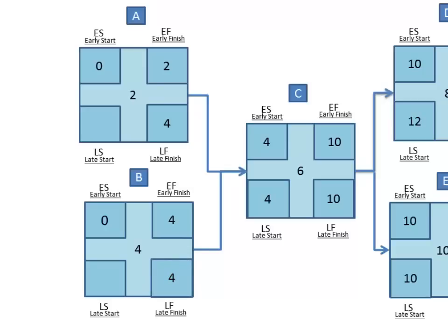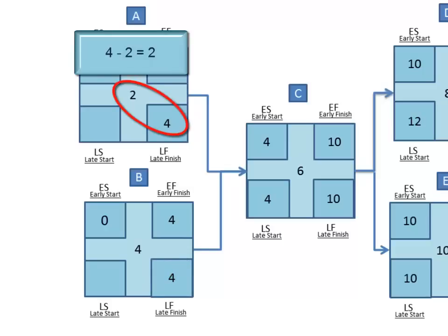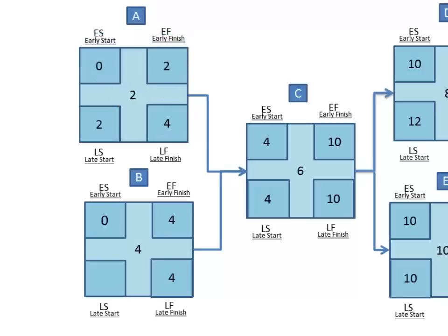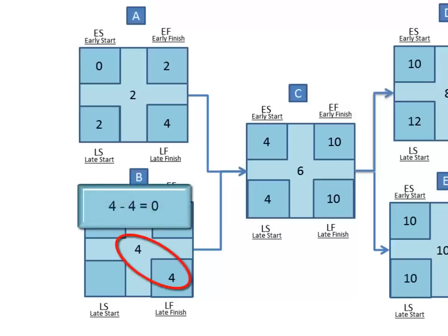Now, subtract the duration of task A from the late finish, and the same for task B, which is four minus four, or zero.